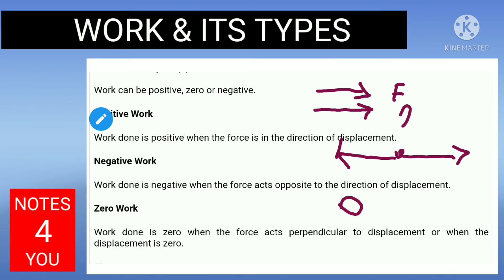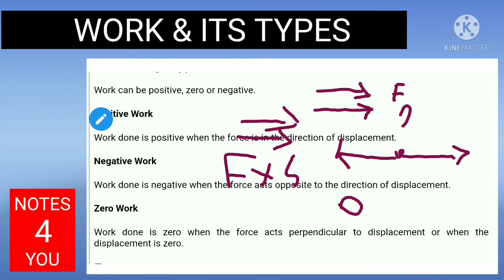So these are the types of work: positive, negative, and zero. The unit of work is joule and the formula is force into displacement. If both force and displacement are in the same direction, it is positive work. If they are opposite, it is negative work. And if the displacement is zero, it is known as zero work.